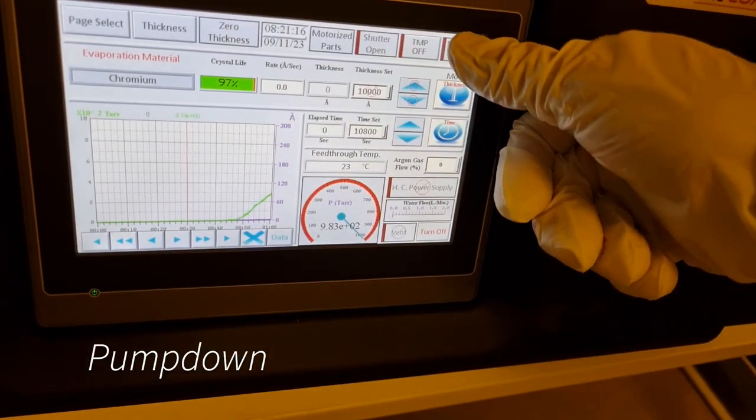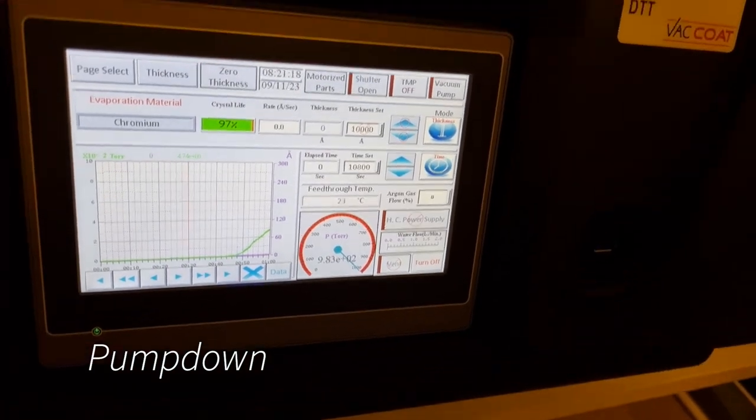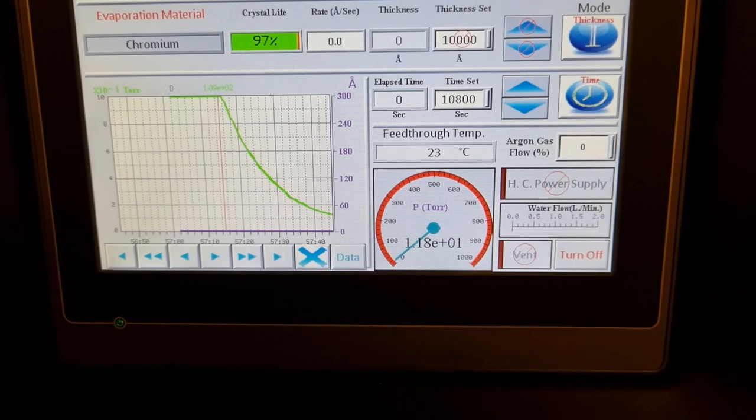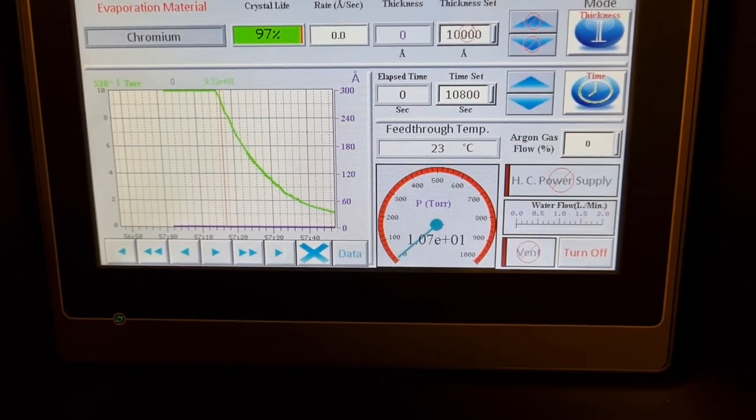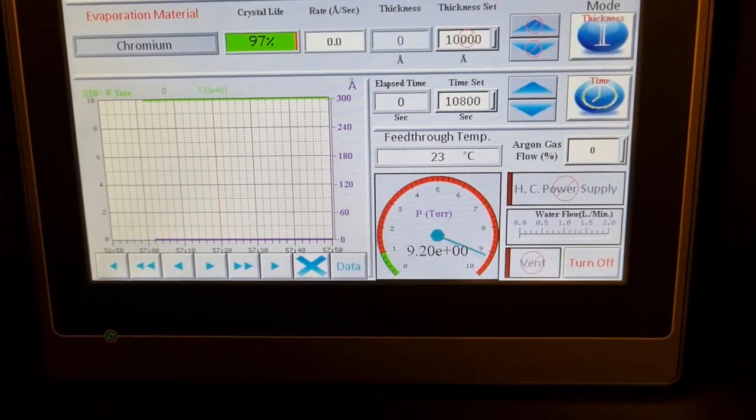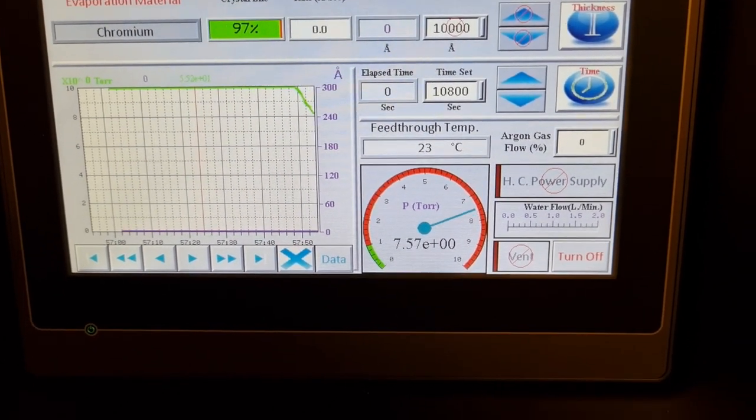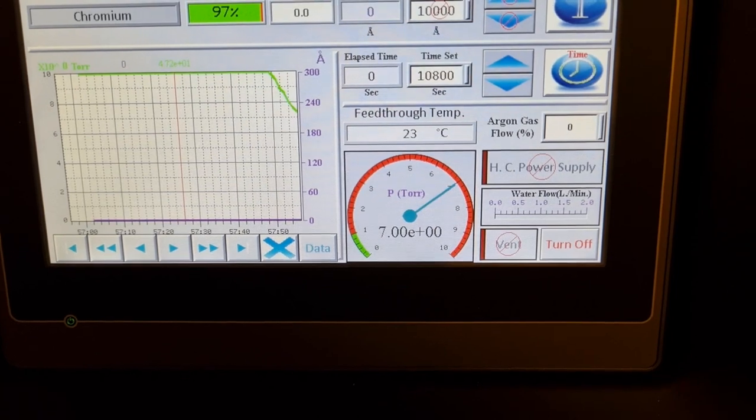With the lid closed, we're now clear to press vacuum pump. This turns on the mechanical roughing pump. Very quickly, the lid should hold itself shut. Within a minute or so, the pressure should start to drop fairly rapidly. The pressure gauge doesn't read atmospheric pressure, so it has to get down a little bit before it becomes in range.